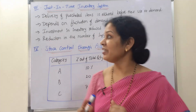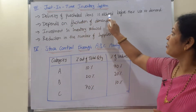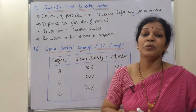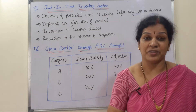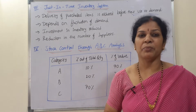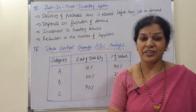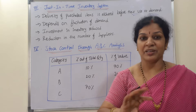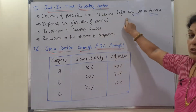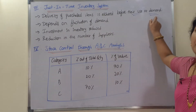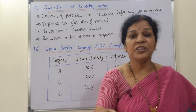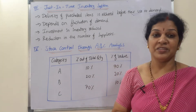The first feature of Just-In-Time is that delivery of purchased items is assured just before they are used or demanded. We don't want to store material unnecessarily. Sometimes there can be problems with storing — expiry dates, evaporation of chemicals, and similar issues. That is why we take delivery just before use or before demand. This is one of the most important features of the JIT system.